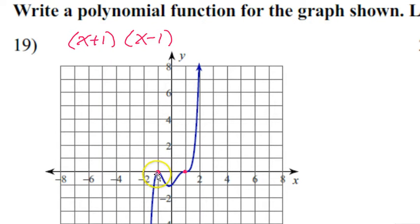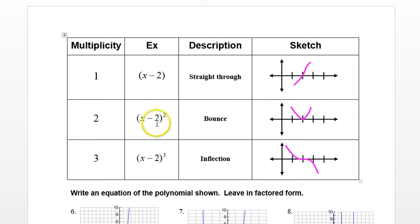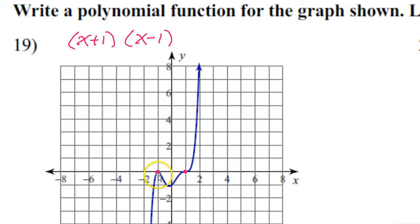So looking back at this, at this first zero at negative one, this is going to be a bounce. Okay, so a bounce means that that factor must be multiplicity two. It must be a squared. So since there's a bounce at negative one, and that came from a factor of x plus one, then this is going to have to be squared.